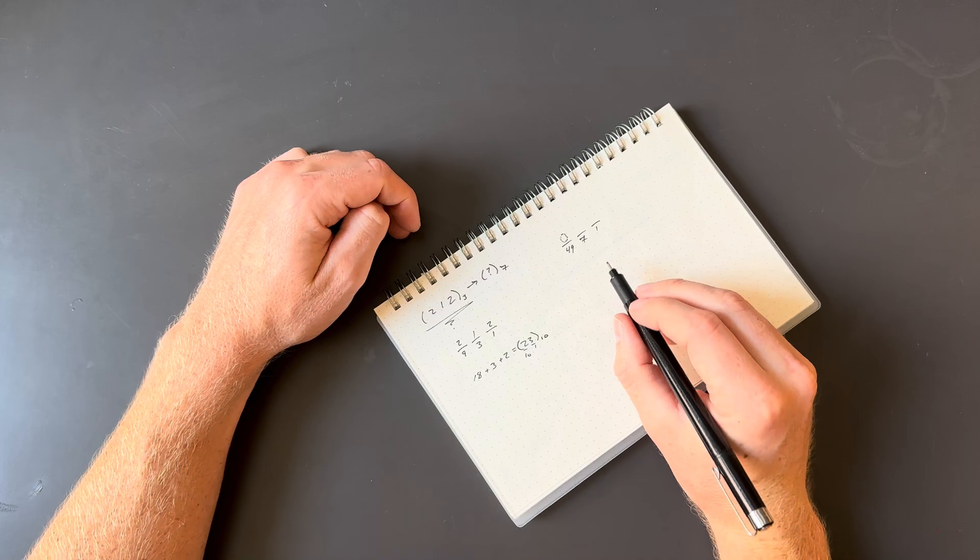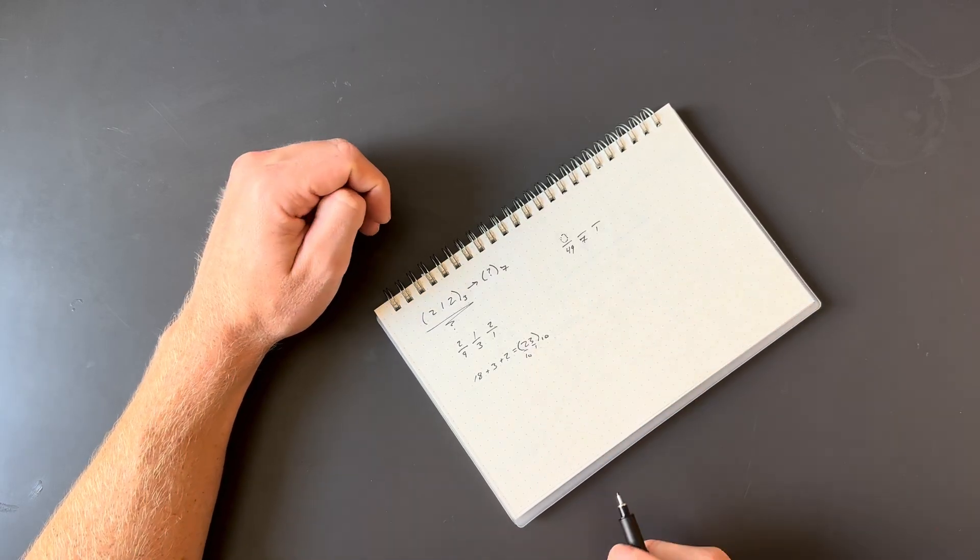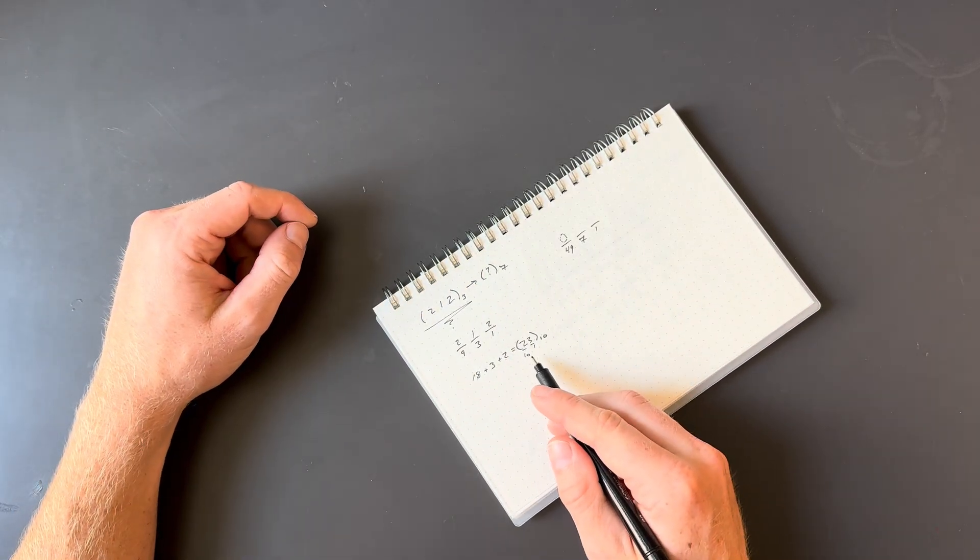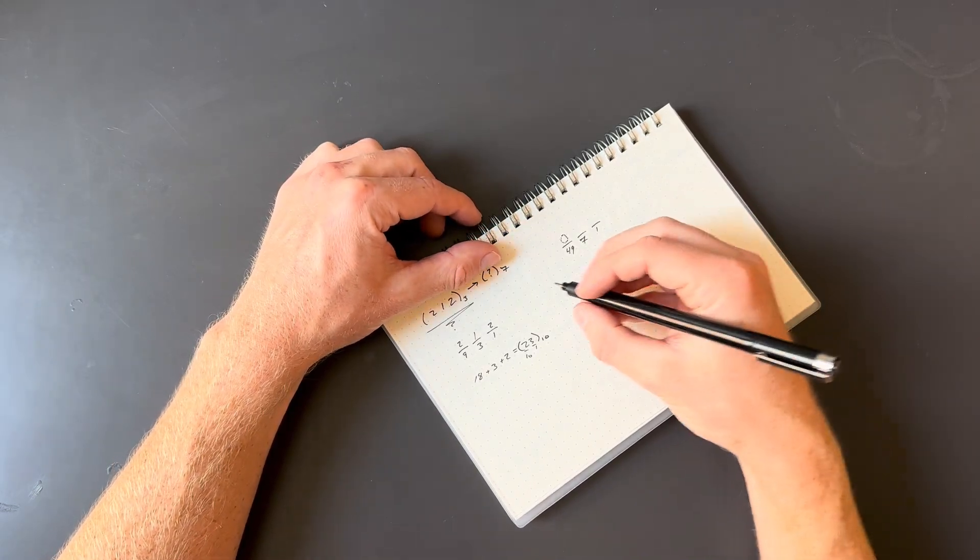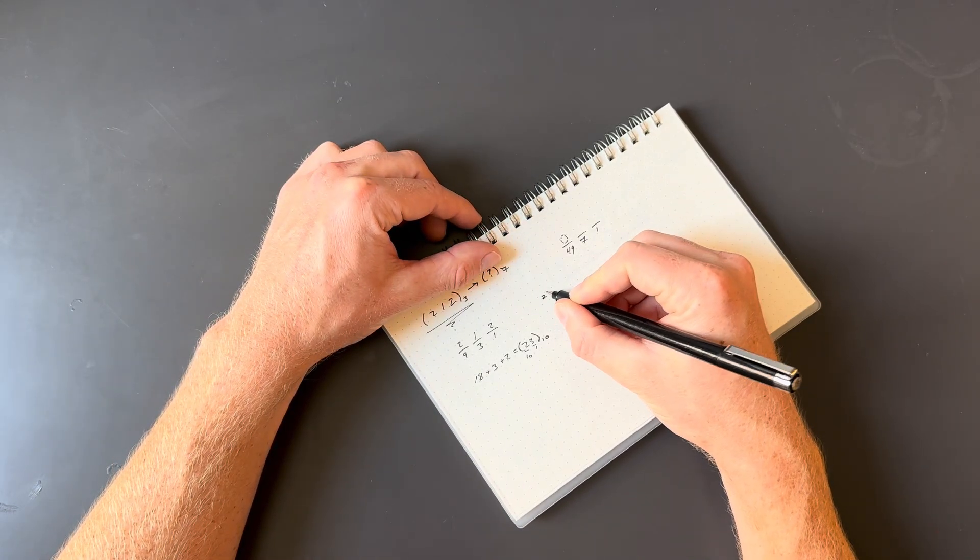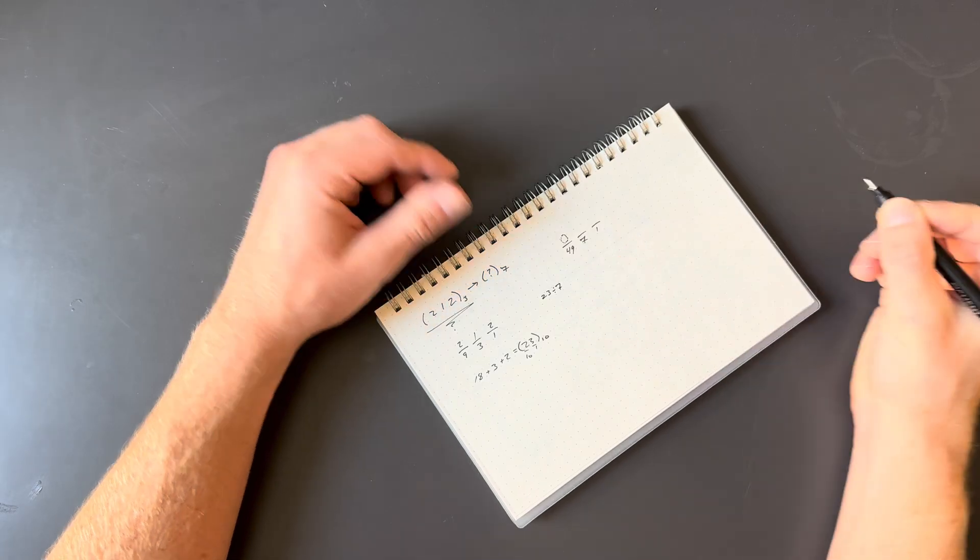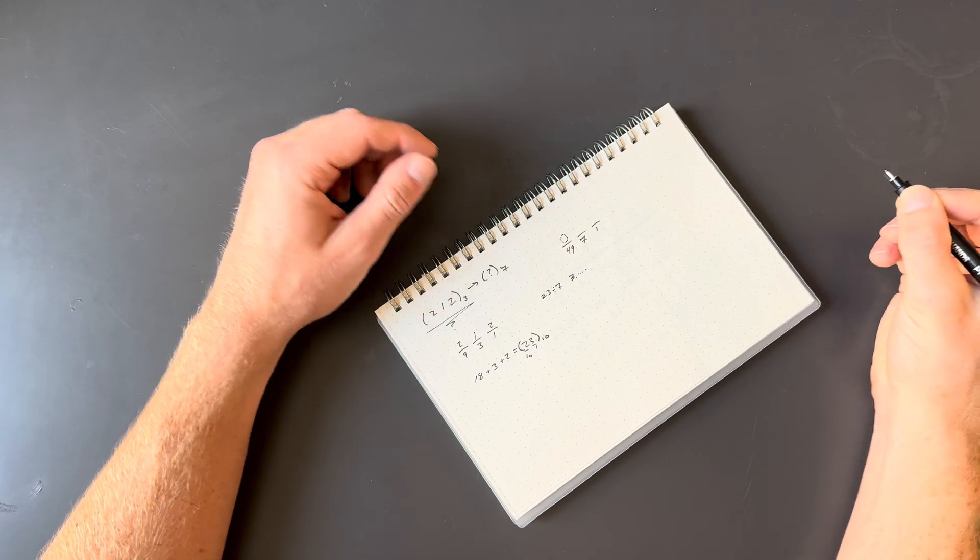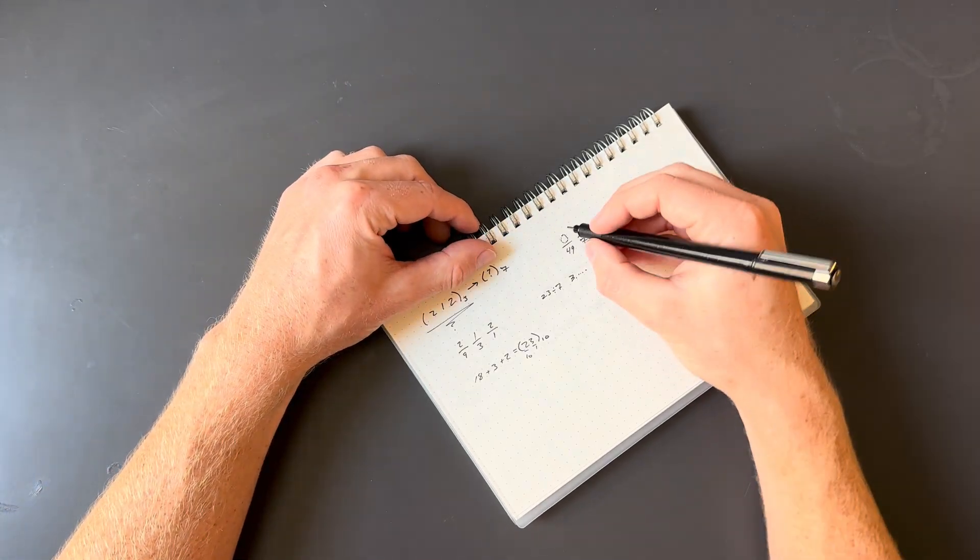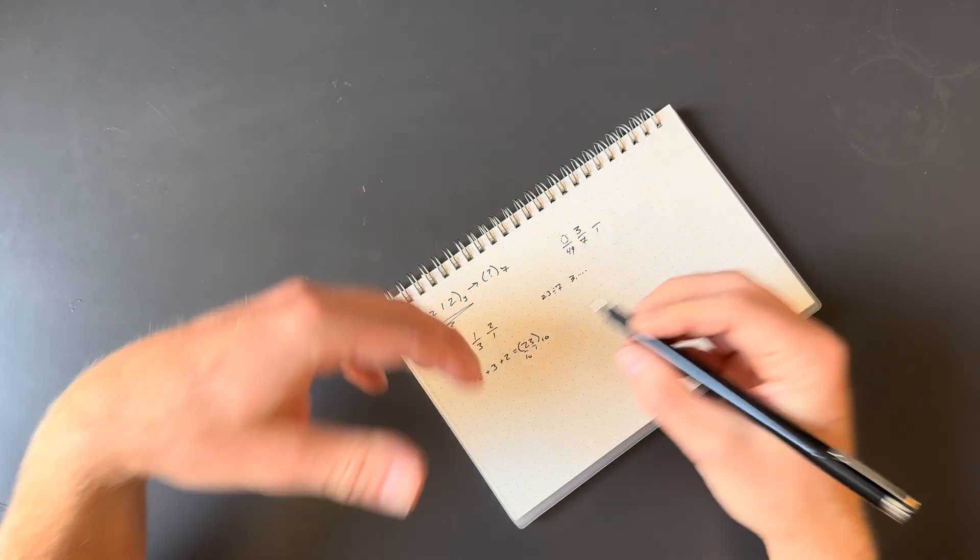So then we have to think about how many 7s can we fit into the quantity we're trying to arrive at, 23. Well, you could take a calculator out and say 23 divided by 7, and it would give you 3 point something. A little more than 3. So we know we can take 3, but 4 won't fit.